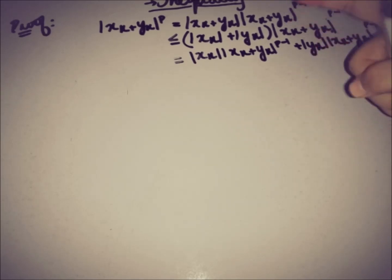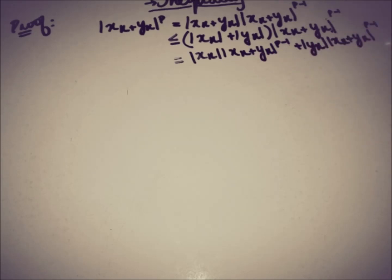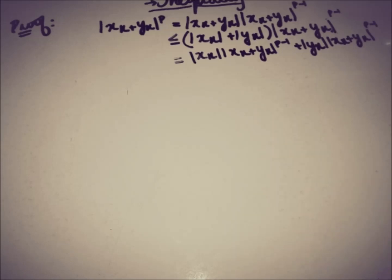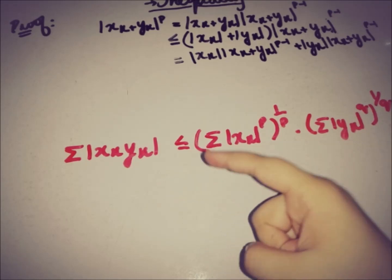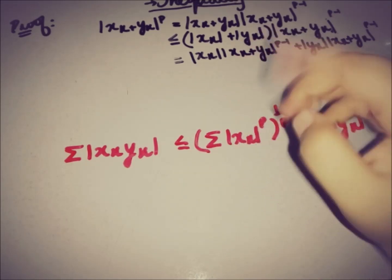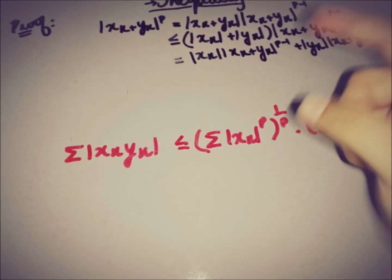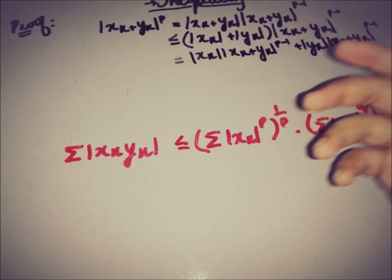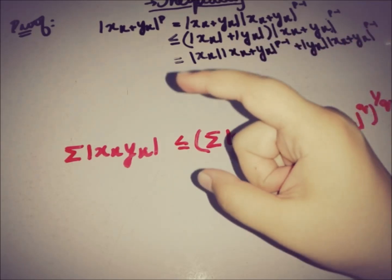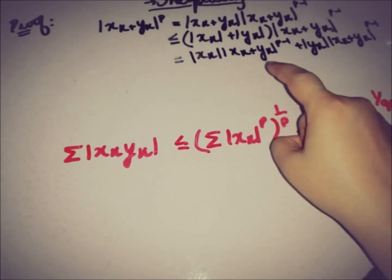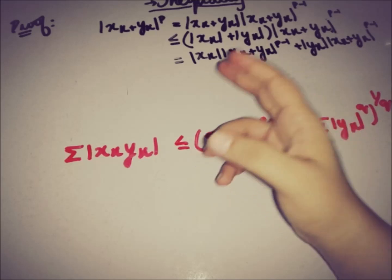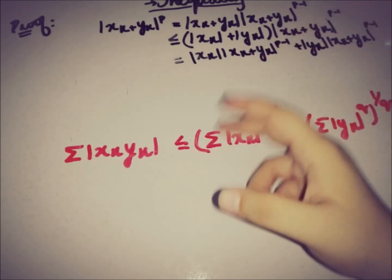We have multiplied |xk + yk|^(P−1) into both |xk| and |yk|. Now taking the summation of both sides, we have the sum of |xk + yk|^P less than or equal to the sum of the right-hand side. We can apply Hölder's inequality to each term on the right-hand side.